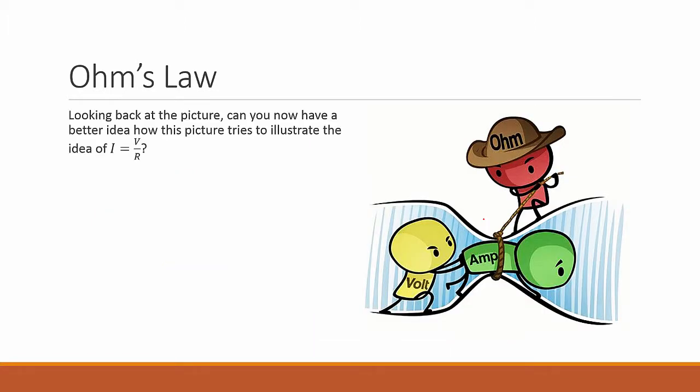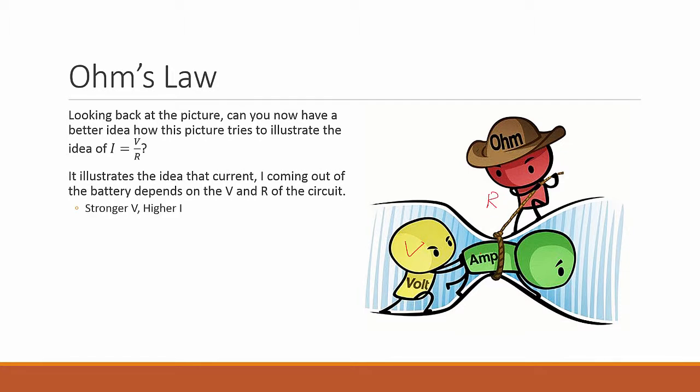Looking back at this picture, now can you have a better idea of how this picture is trying to illustrate the idea of I equals V over R. This illustrates that the current I coming out of the battery depends on V and R. So if V is stronger, I will be higher, because he is able to push more of the I across. But if R is stronger, you find that he is able to restrict the I, so I will be lower.